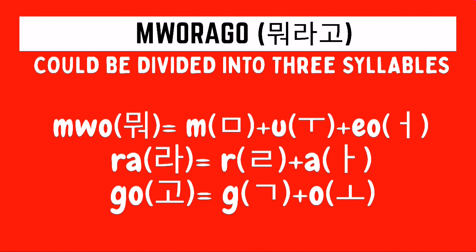For the second syllable, ra, we need to draw first a real character, followed by an a character. For the third syllable, go, we need to draw first a giyak character, followed by the o character. And then we just have to combine the Hangul for each of these syllables to form the Hangul of the expression, porago.